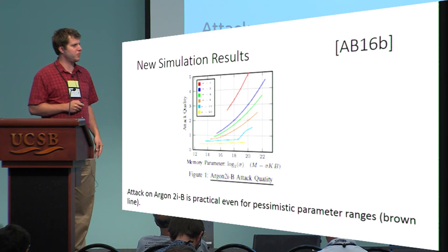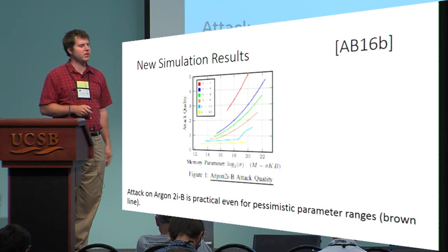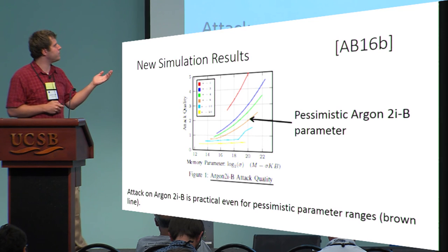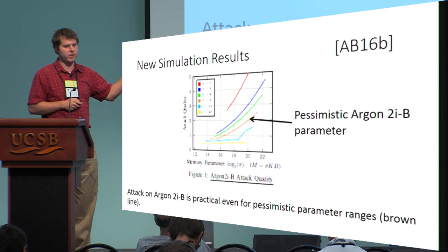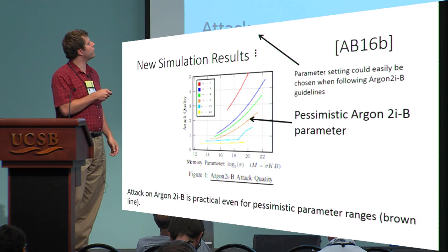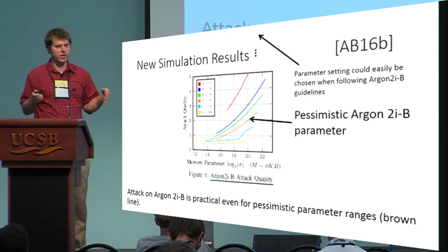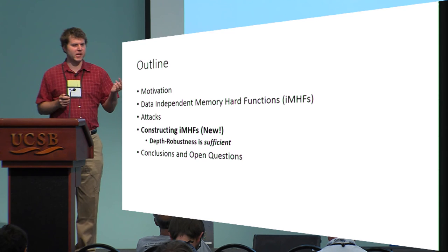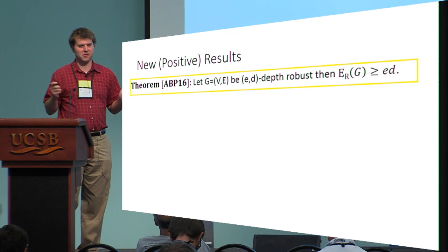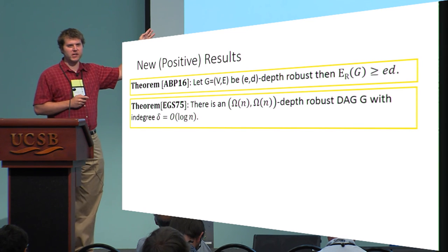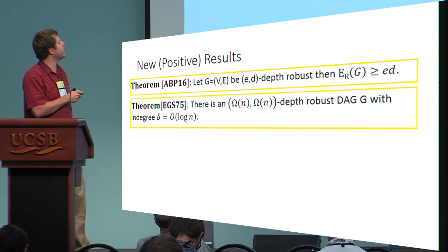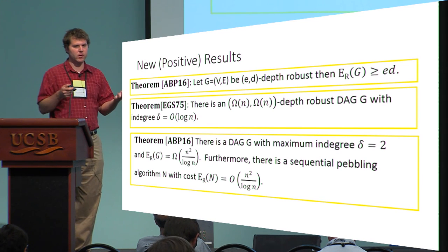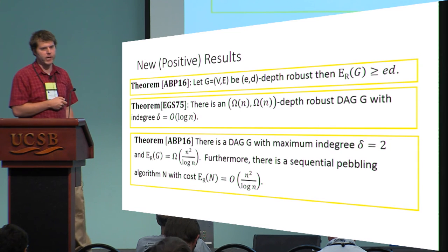We have some new results simulating our attack, and these results show that our attack is much more efficient in practice. In particular, we still get high-quality attacks against the new version Argon2iB with pessimistic parameters, and for non-pessimistic parameters — which could easily be chosen by the parameter selection process — attack quality is kind of through the roof.